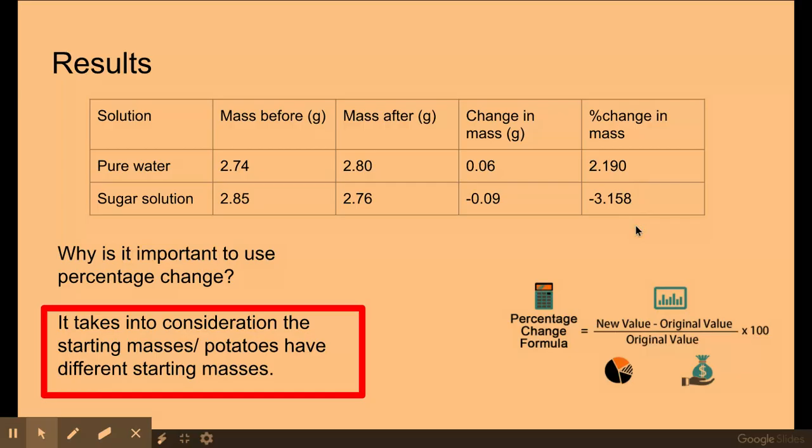Really important to use percentage change in mass because it takes into consideration the starting masses. Potatoes here have different starting masses. It's very difficult to get your potatoes or vegetables, whatever you use, to the same mass. So by using percentage change in mass, it takes into consideration that starting mass of the potato.